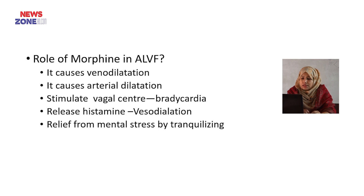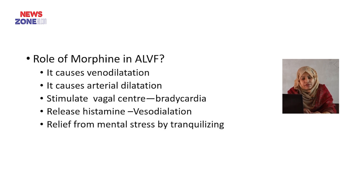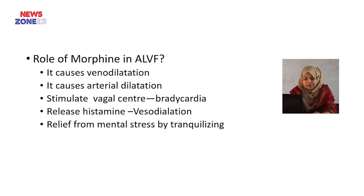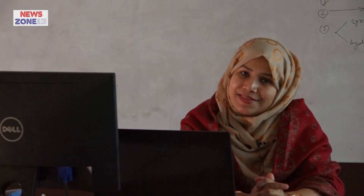The role of morphine in acute left ventricular failure is an important written exam topic. It causes venodilatation and arterial dilatation, stimulates the vagal center causing bradycardia, releases histamine causing vasodilatation, and provides relief of mental stress by tranquilizing. That concludes our online session. Allah Hafiz. Thank you.